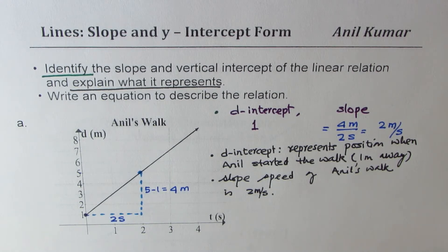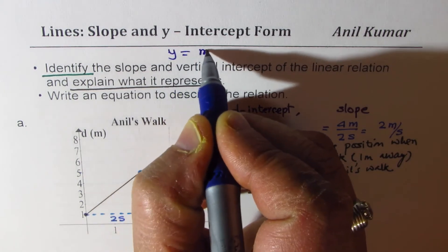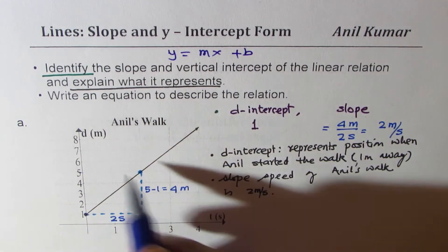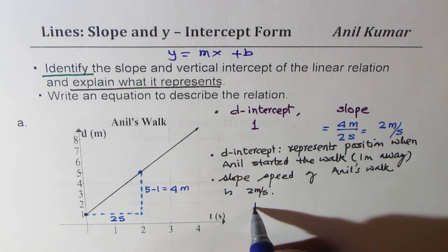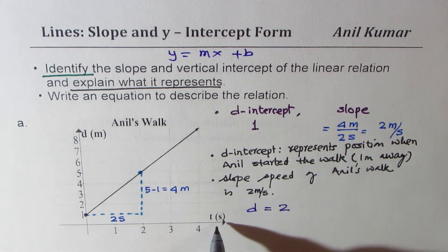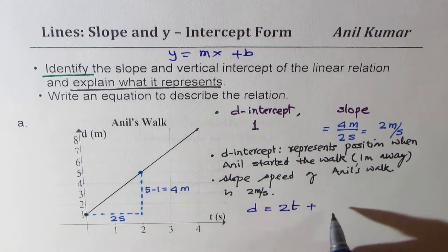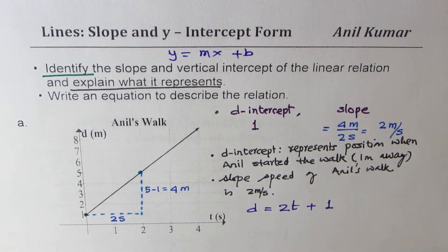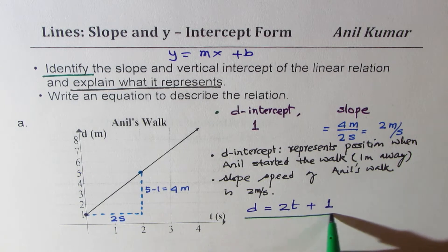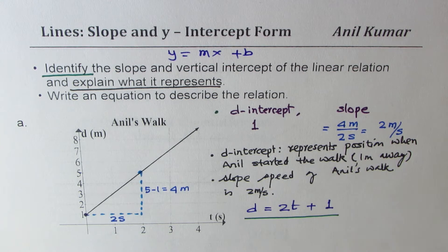Now let us answer the last question: write the equation to describe the relation. The equation will be written in the form y equals mx plus b. In this case, distance d equals the slope of two meters per second times t, where the independent variable is time, plus the initial position of one unit. So the equation is d = 2t + 1. I hope all the steps are clear — this will be repeated for the next three examples to give you more practice.